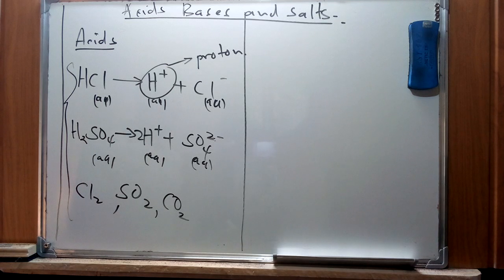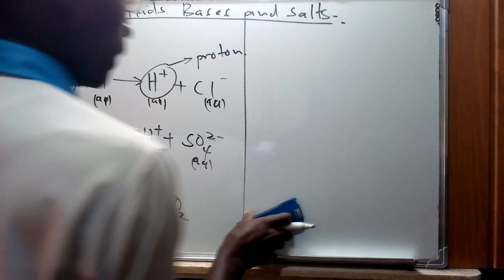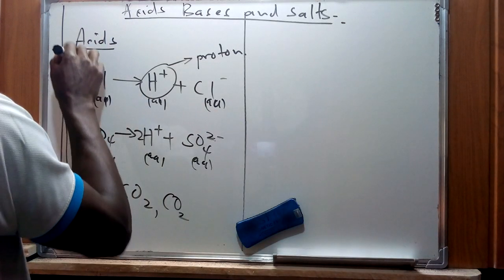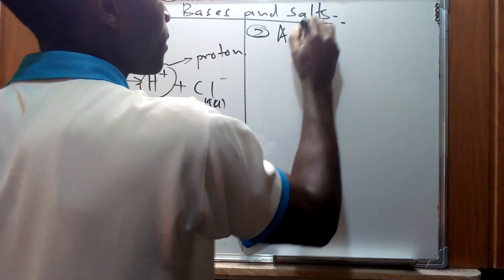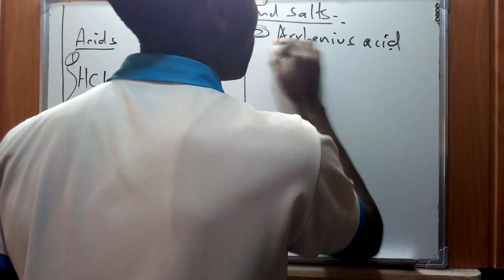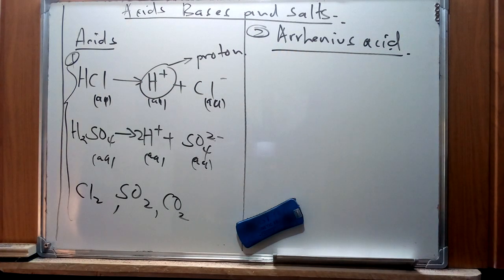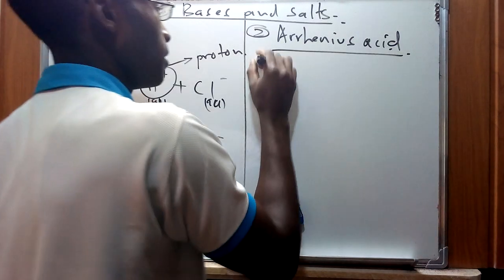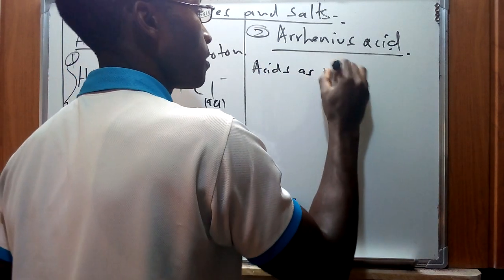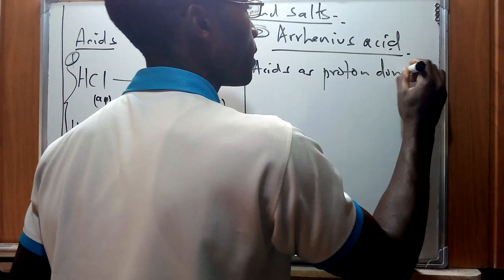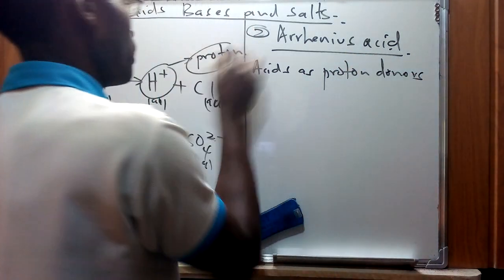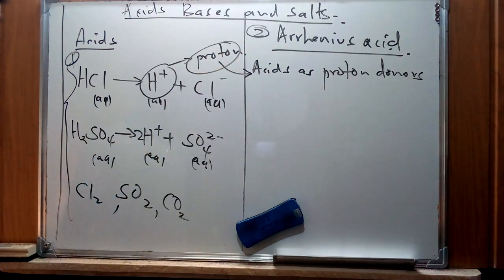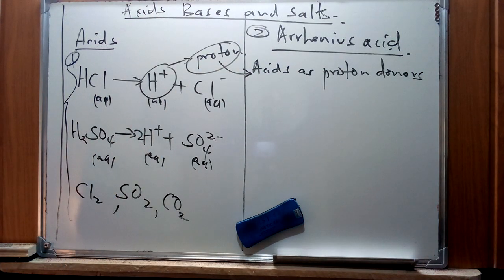As we advance we're going to see different versions in which we can refer to substances known as acids. The second definition is the Arrhenius definition of an acid. The Arrhenius definition is a classical concept — it defines acids as proton donors. So Arrhenius defines acids as proton donors, and we will also see a version of the Arrhenius definition for bases.